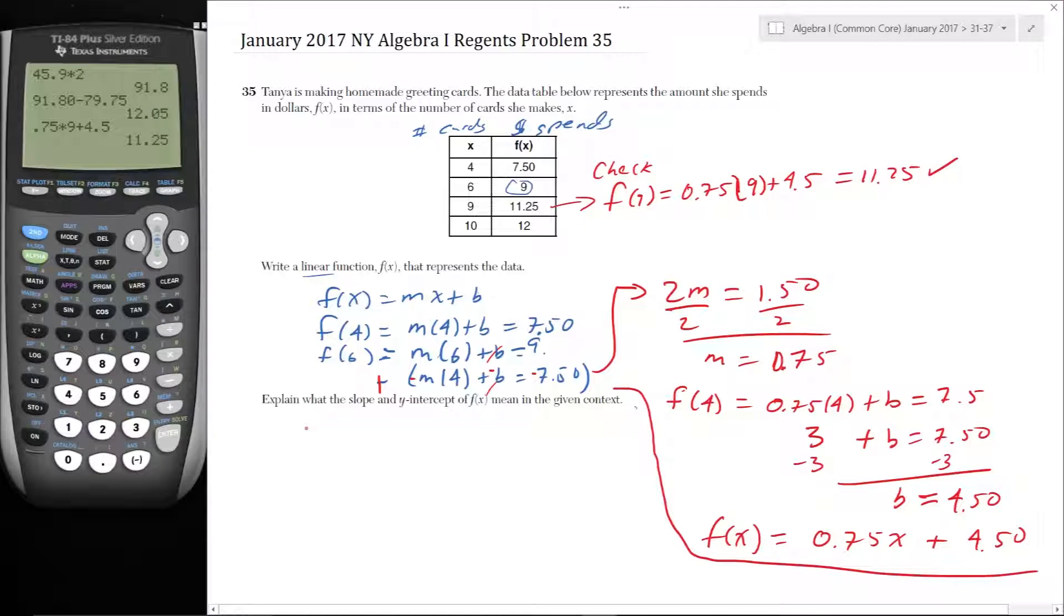Now, explain what the slope and the Y-intercept for F of X mean in the given context. So again, if X is the number of cards and F of X is the amount that she spends, clearly then the right side values are costs, expenditures. So this is a variable cost that depends on how much she spends on each card. So the $0.75 is exactly how much she spends per card.